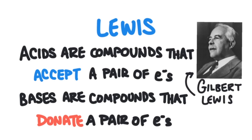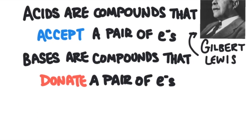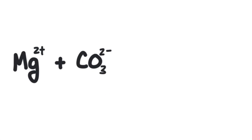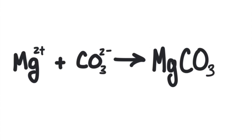The third definition is called the Lewis definition, named after an American chemist. Lewis found that there were compounds that had all the properties of an acid but did not contain any hydrogen ions. His definition says that acids are compounds that can accept a pair of electrons from another compound, and bases are compounds that donate that pair of electrons. For example, the carbonate ion has an extra pair of electrons (signified by its negative charge) and magnesium is lacking electrons (signified by its positive charge). When carbonate donates its extra electrons to magnesium, we have a Lewis acid-base reaction. Donating can also mean sharing the extra electrons with another substance.